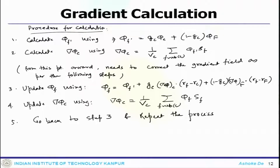After that, one needs to follow three more steps. You update phi_f using phi_f equals phi_f prime plus Gc times delta phi_c dot (Rf minus Rc) plus (1 minus Gc) times delta phi_F dot (Rf minus Rf). Then you update delta phi_c using (1/Vc) summation over the faces of phi_f times Sf. Then you go back to step 3 and repeat the process.